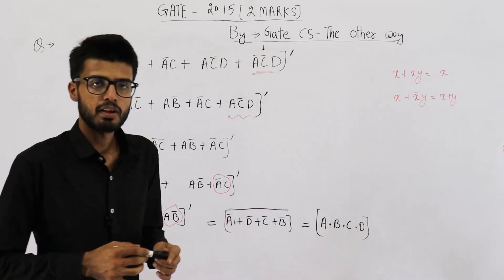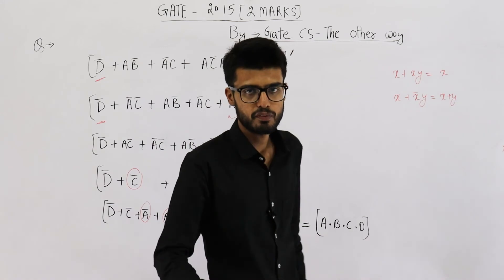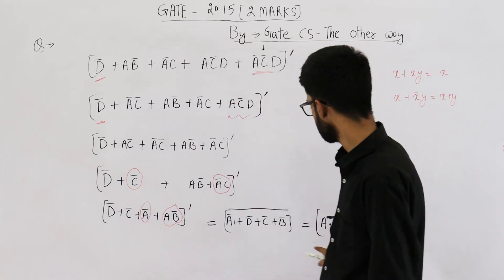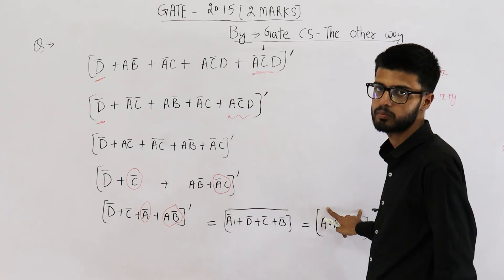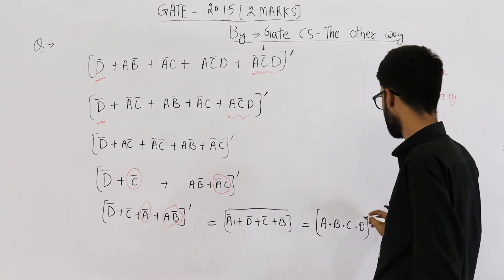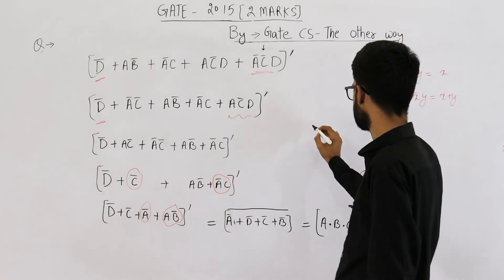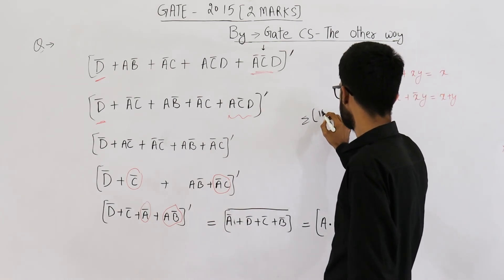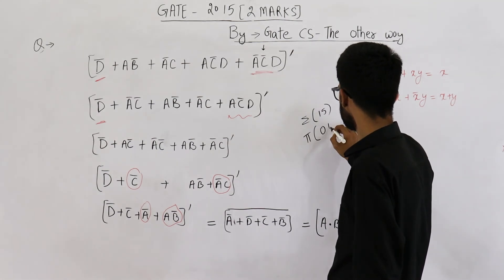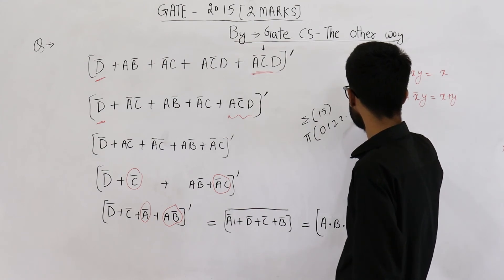The function is on four variables a, b, c, d. This term has all four variables a, b, c, d, so we can classify this term as a minterm. We have only one minterm which is 1·1·1·1, that is minterm 15. So the function is σ(15), or equivalently π(0, 1, 2, 3, ..., 14).